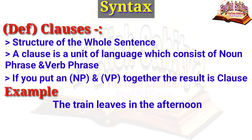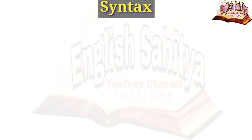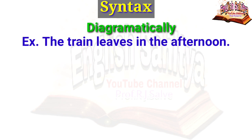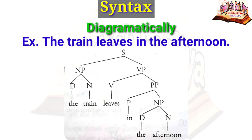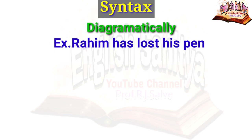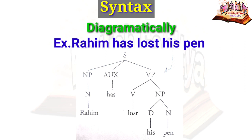If you put a noun phrase and a verb phrase together, that is called a clause. For example: 'the train leaves in the afternoon.' Diagrammatically: 'the train' is the noun phrase — 'the' is the determiner, 'train' is the noun; 'leaves in the afternoon' is the verb phrase — 'in' is the preposition, 'the' is the determiner, 'afternoon' is the noun. Another example: 'Rahim has lost his pen' — 'Rahim' is a noun, 'has' is an auxiliary verb, 'lost' is the verb, 'his' is a determiner, and 'pen' is a noun.